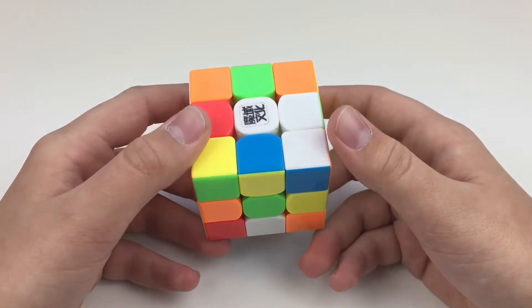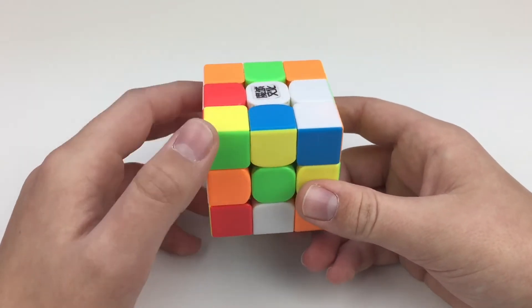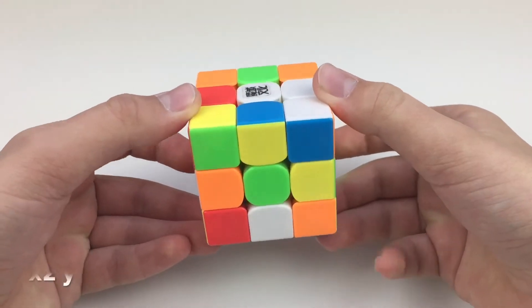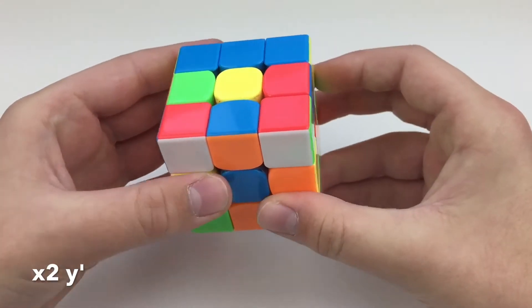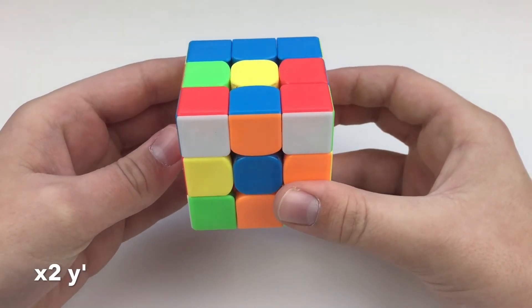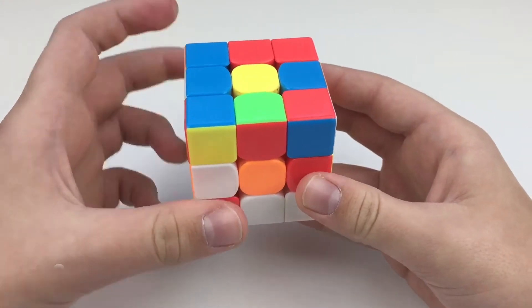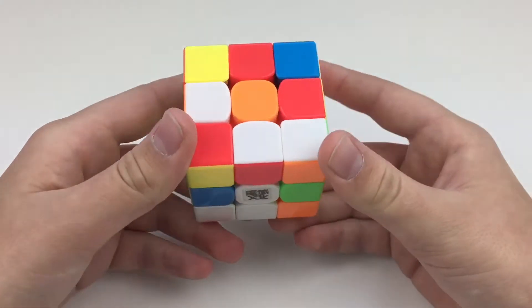After you're done with the scramble, what you need to do is X2, which means flip the cube over like this, and then a Y' which means rotate the entire cube like this, kind of like a U' but with the entire cube. And this is how he started the solve.